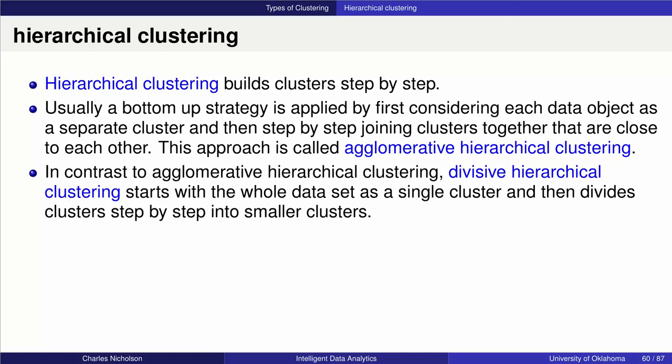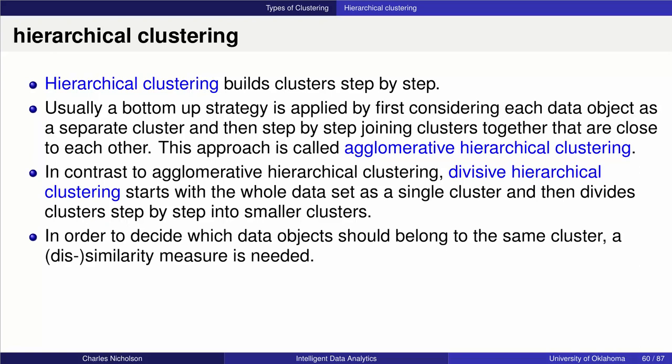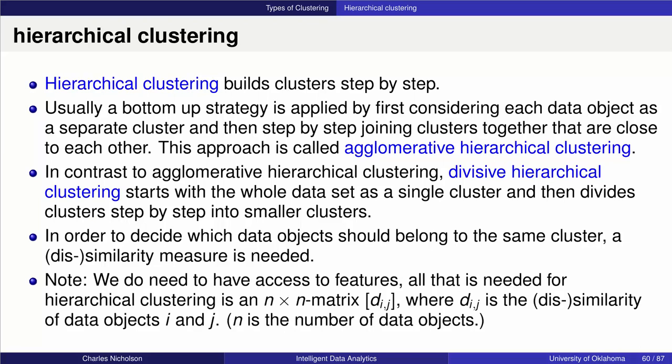The divisive approach starts with all data as one cluster and then breaks it up into smaller and smaller clusters. You need some type of dissimilarity measure, just like you do with k-means. One interesting note is you don't actually need the information on all the features themselves — all you need is a distance matrix showing the distances from each object to every other object, which is essentially an n-by-n matrix of distances.